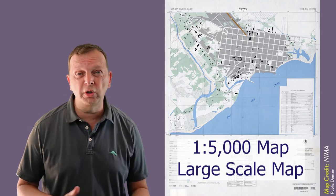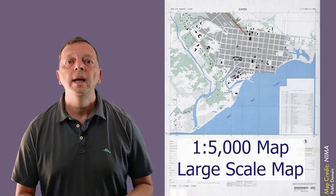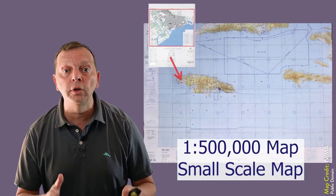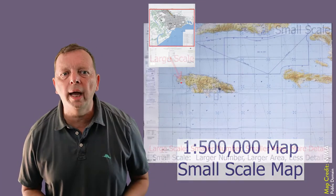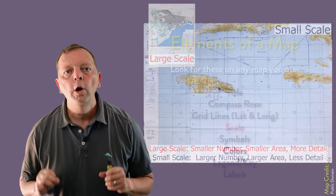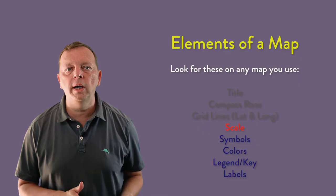For this reason, a one to 5,000 scale map, which is often used for city maps, is considered a larger scale than, say, a one to 500,000 scale map that is usually used to portray a state. Think of a larger scale map as being zoomed in. Once we understand scale and orientation of our maps, now we start looking at the colors and the symbols of our map.